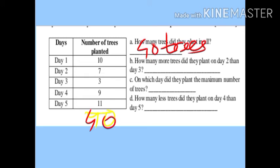Second question: how many more trees did they plant on Day 2 than Day 3? Day 2 has 7 trees, Day 3 has 3 trees. When comparing more or less, do subtraction: 7 minus 3 is 4. So 4 more trees were planted on Day 2 than Day 3.